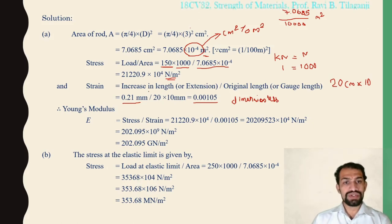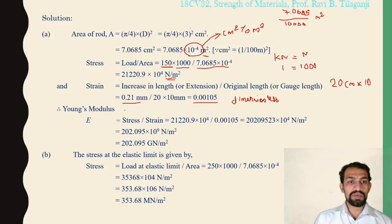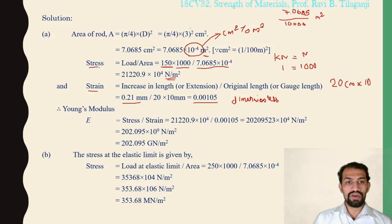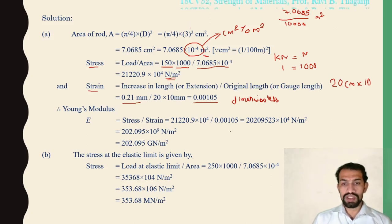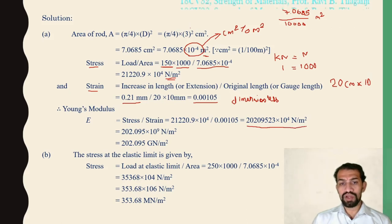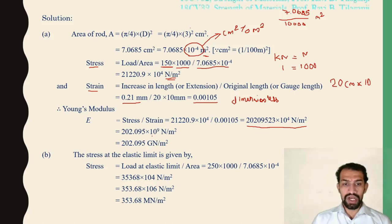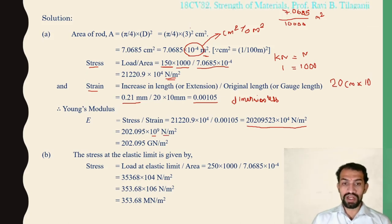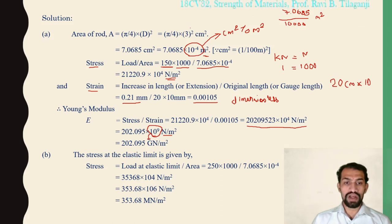Young's modulus E = stress / strain. Substituting the calculated stress and strain values gives E = 2,020,952.3 × 10⁴ N/m². Converting to Giga Newton per meter square (10⁹), we express the result in GPa.